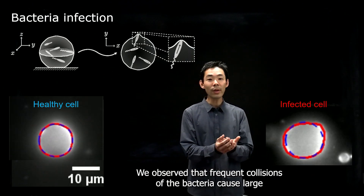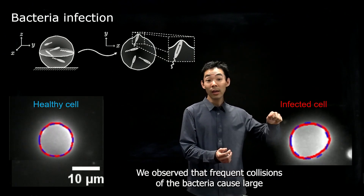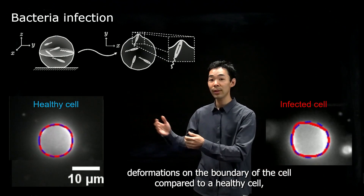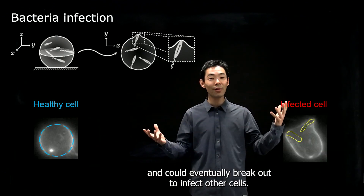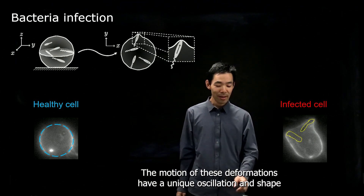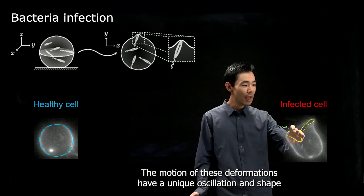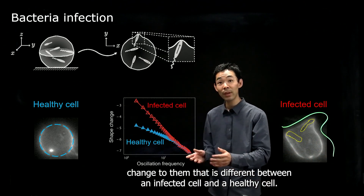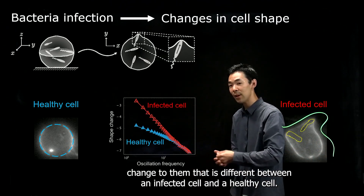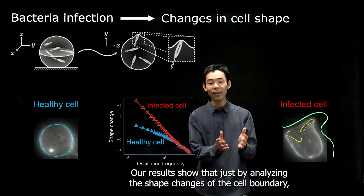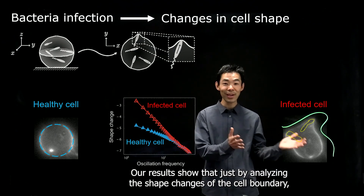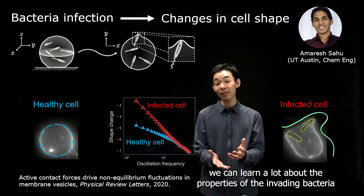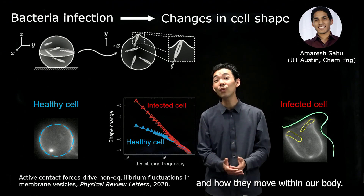We observed that frequent collisions of the bacteria cause large deformations on the boundary of the cell compared to a healthy cell, and could eventually break out to infect other cells. The motion of these deformations has a unique oscillation and shape change that is different between an infected cell and a healthy cell. Our results show that just by analyzing the shape changes of the cell boundary, we can learn a lot about the properties of the invading bacteria and how they move within our body.